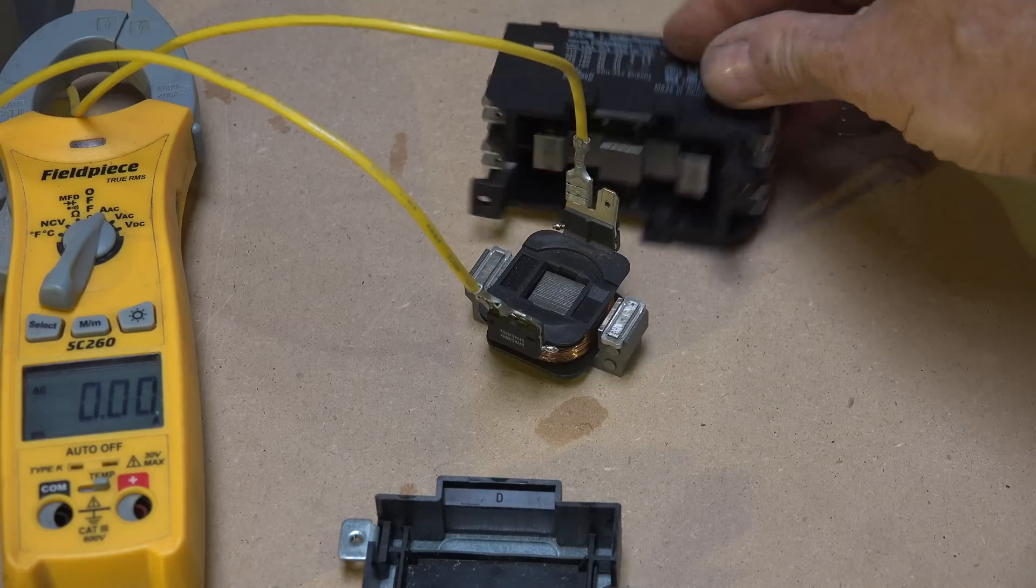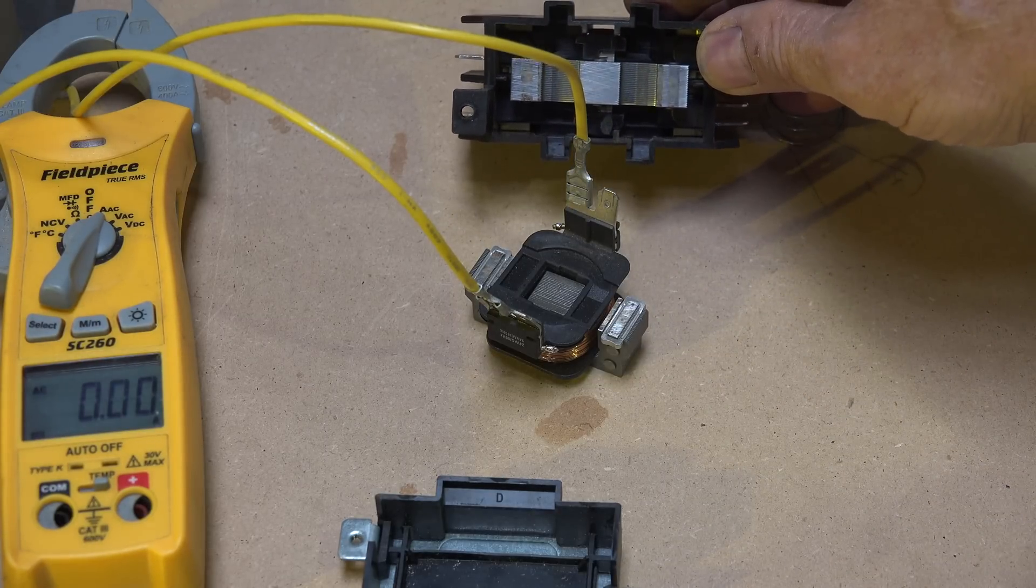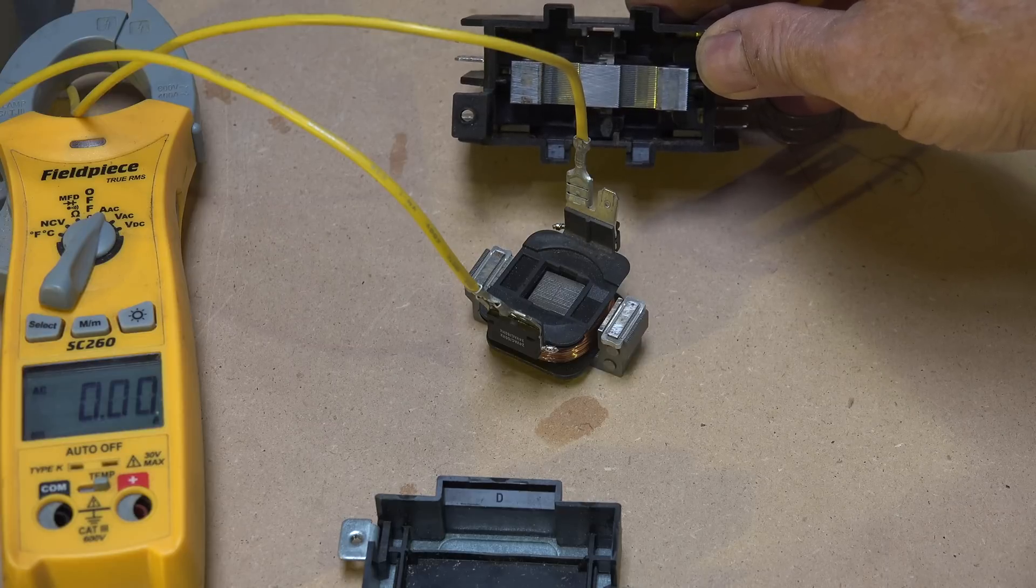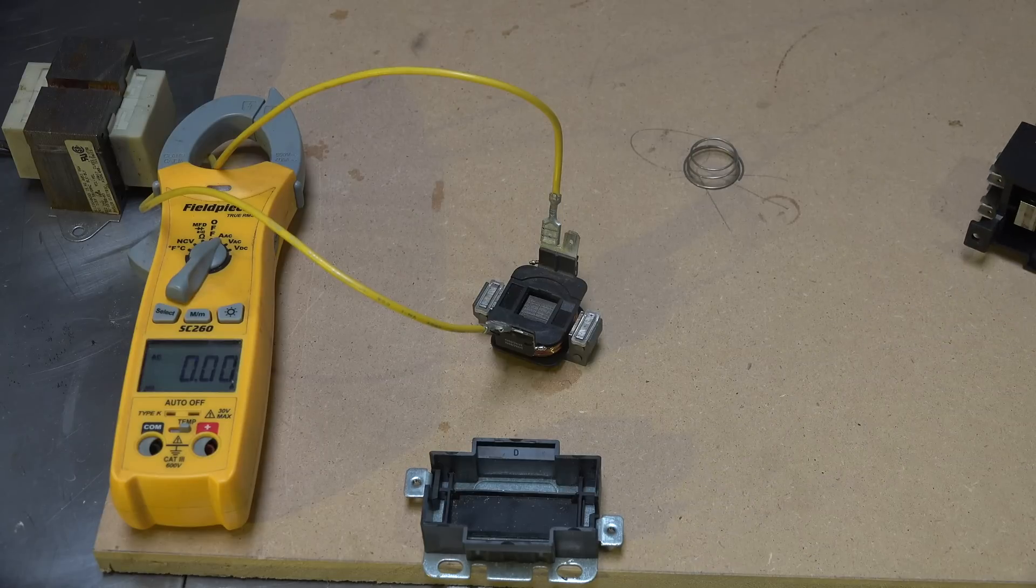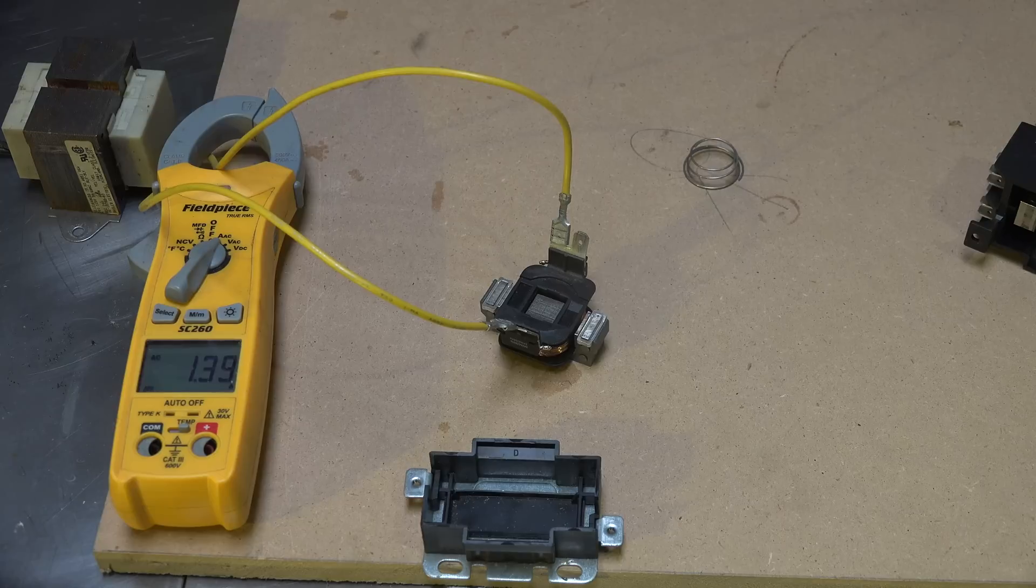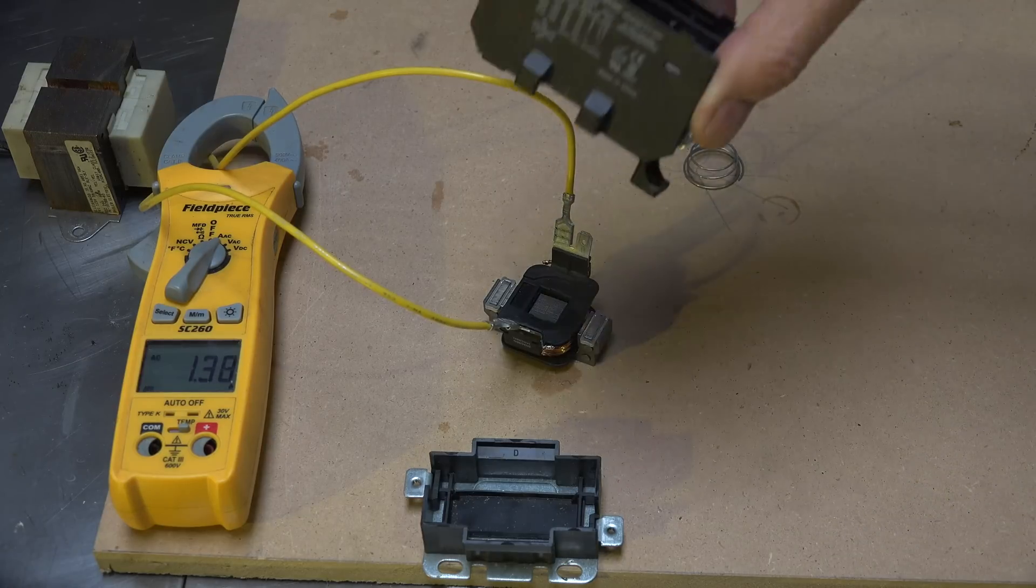And if this half here had been mounted right over it then it would have dropped off. And to demonstrate that I'm going to plug this thing in again. You see we're drawing about 1.4 when I put this over it.